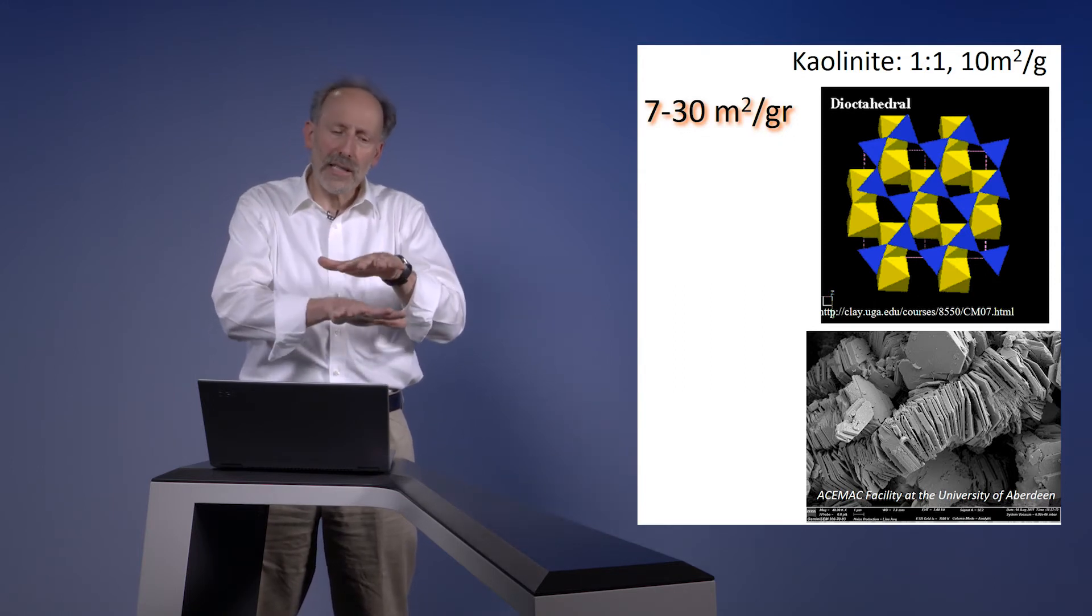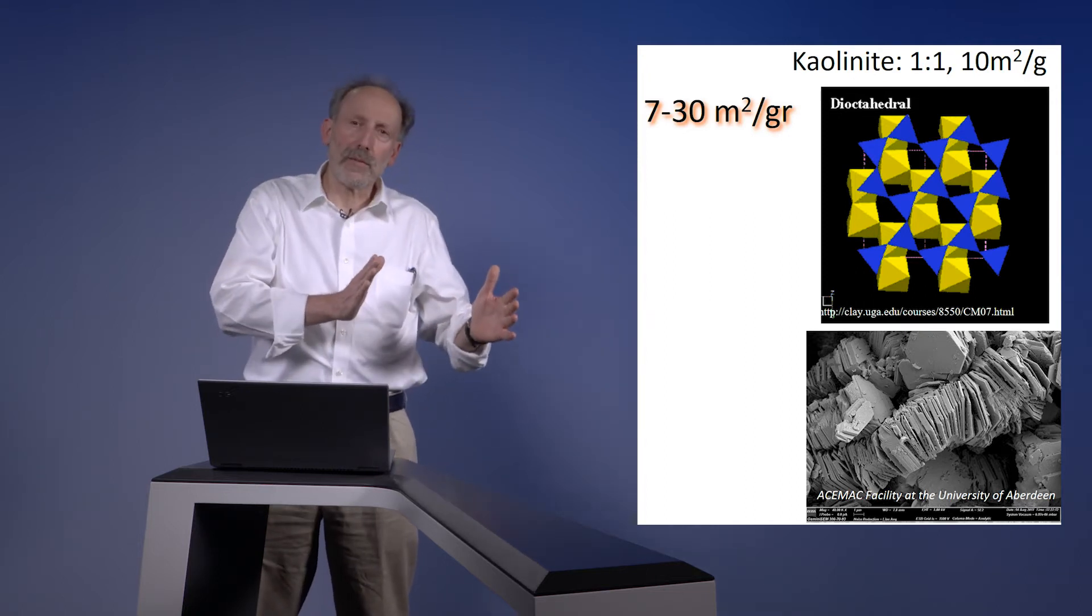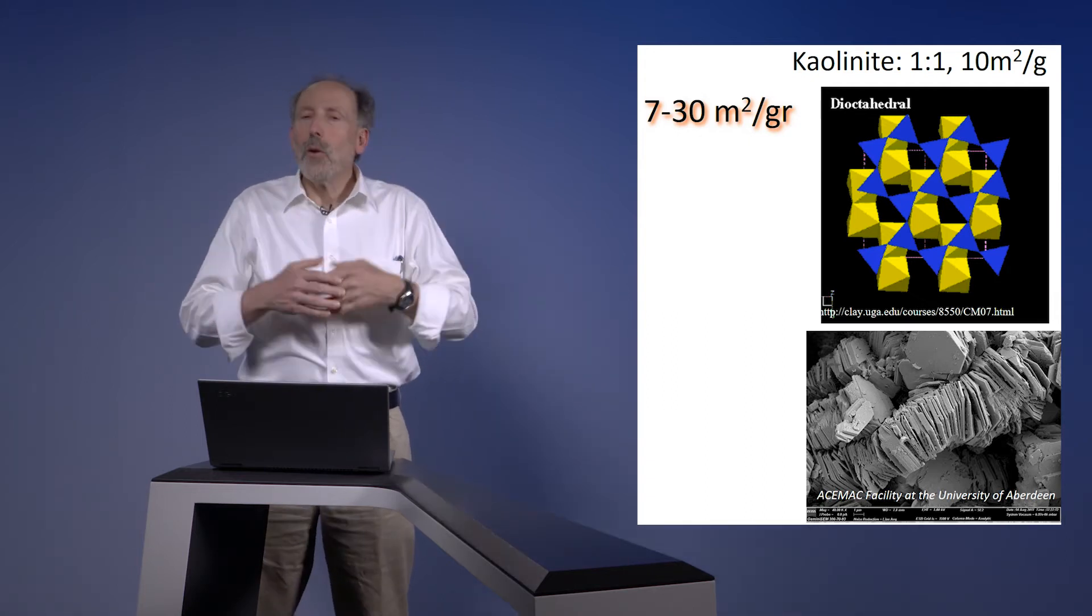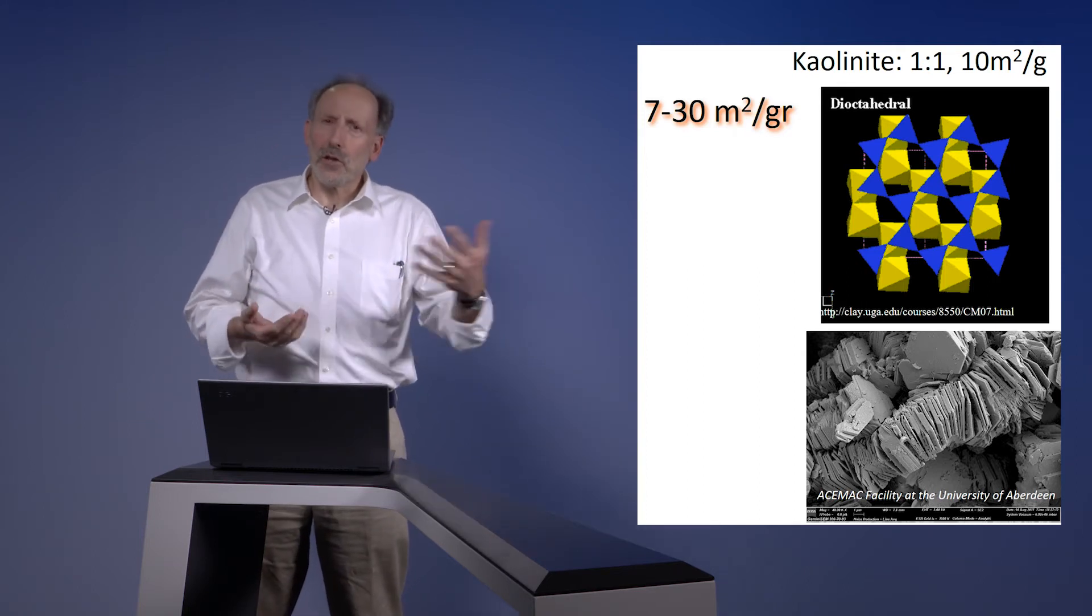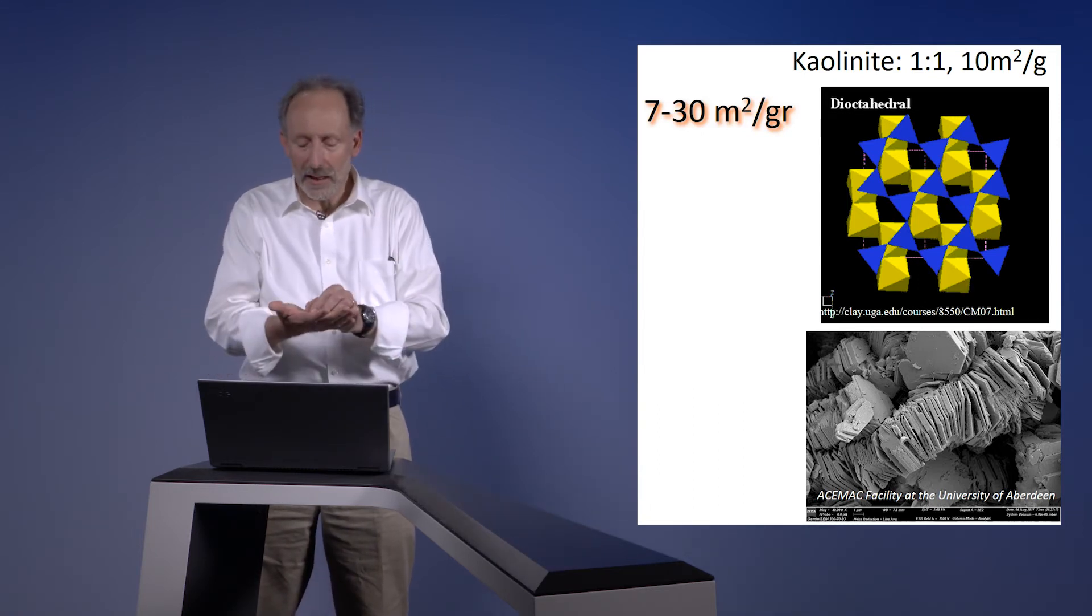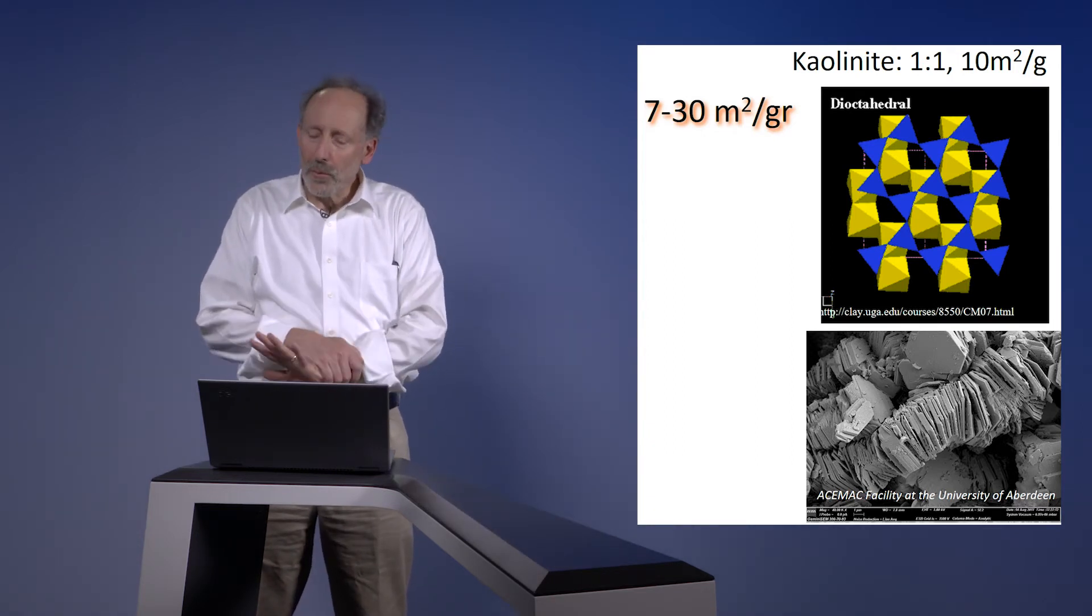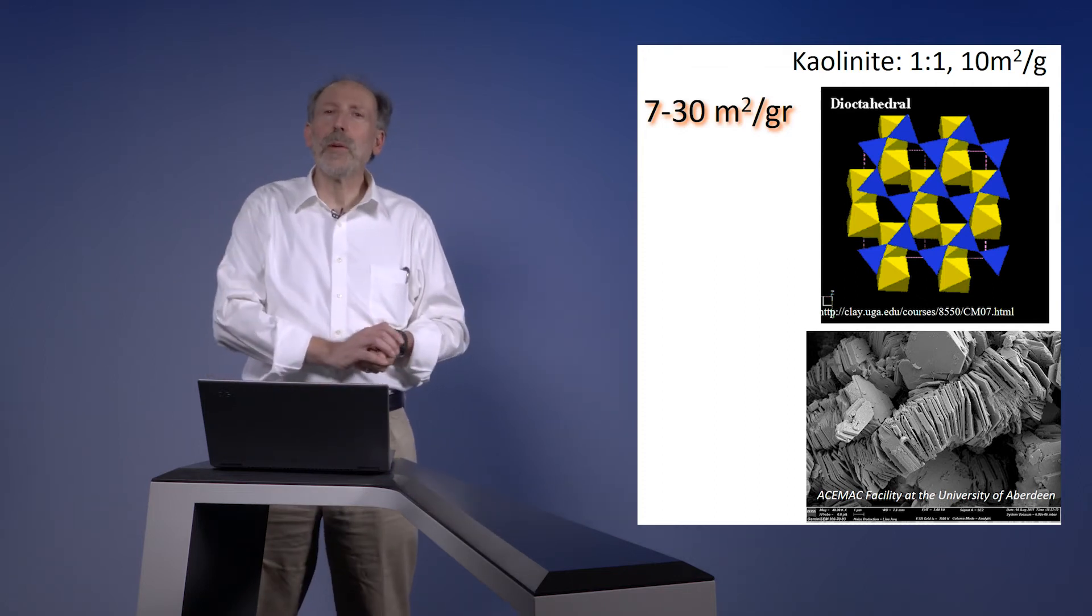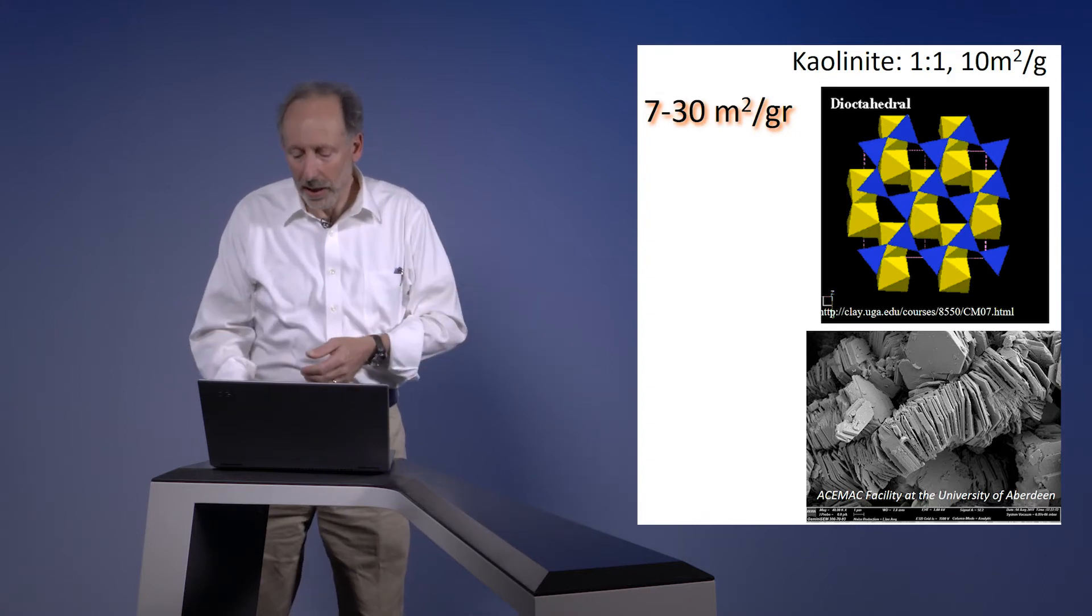The kaolinite has less swelling than many clays, and the packages of kaolinite are thicker than some other clays which get more fractured. What that ends up resulting in is a relatively low surface area, on the order of 10 meters squared per gram. It's not a small surface area by any means. A tiny pinch in your fingers would cover the entire surface area of a typical room. We still have a lot of surface area in the clays, but much less than some other varieties. That's a one-to-one mineral with low isomorphic substitution.